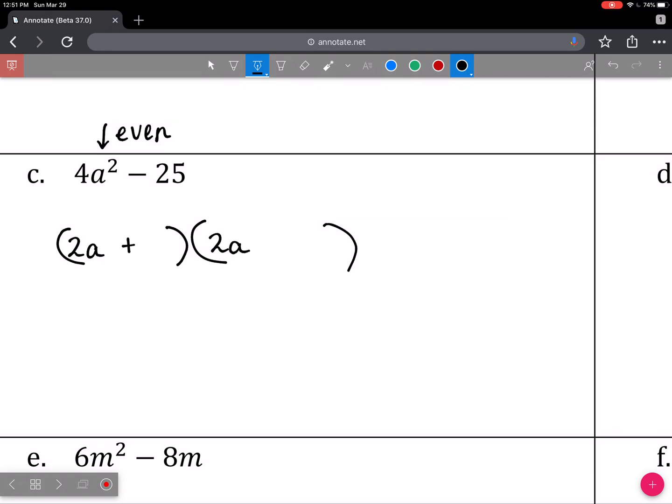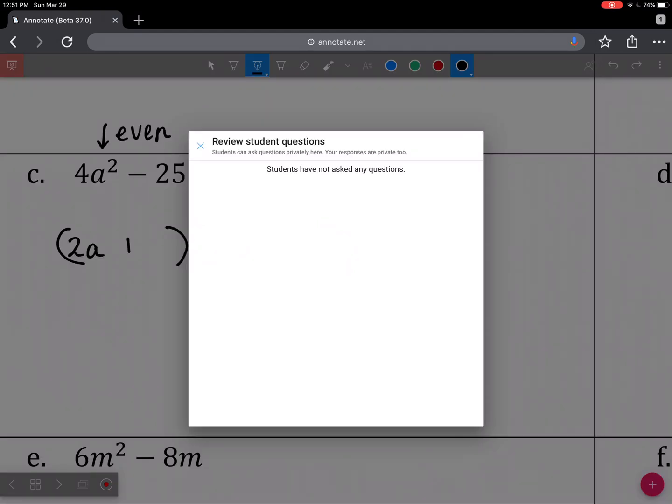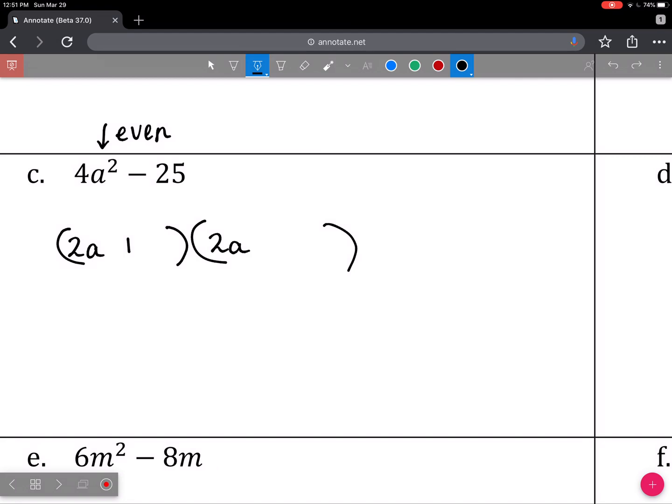Then we write 1 plus, 1 minus, and it doesn't matter the order that you do that in. Now we're thinking square roots of the second term, that's going to be 5 and 5.